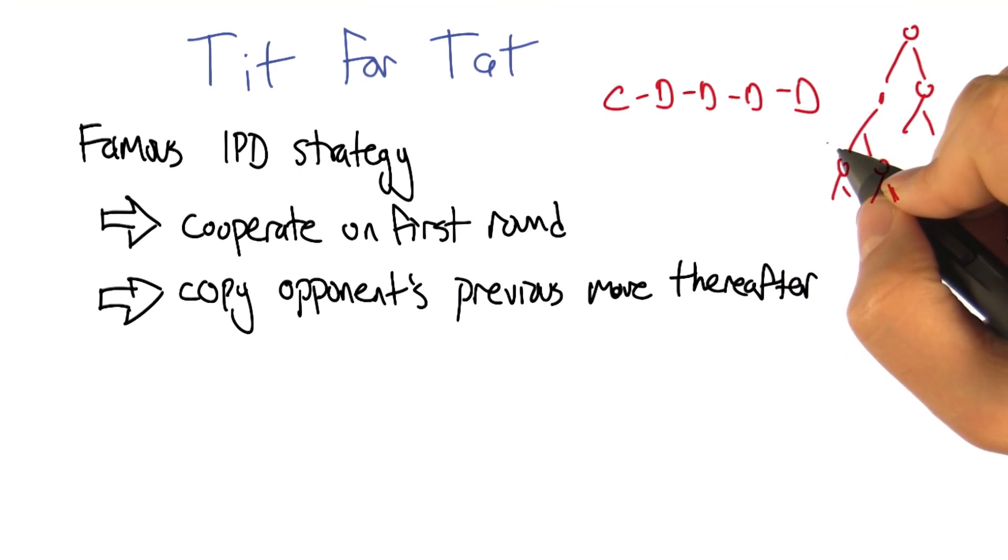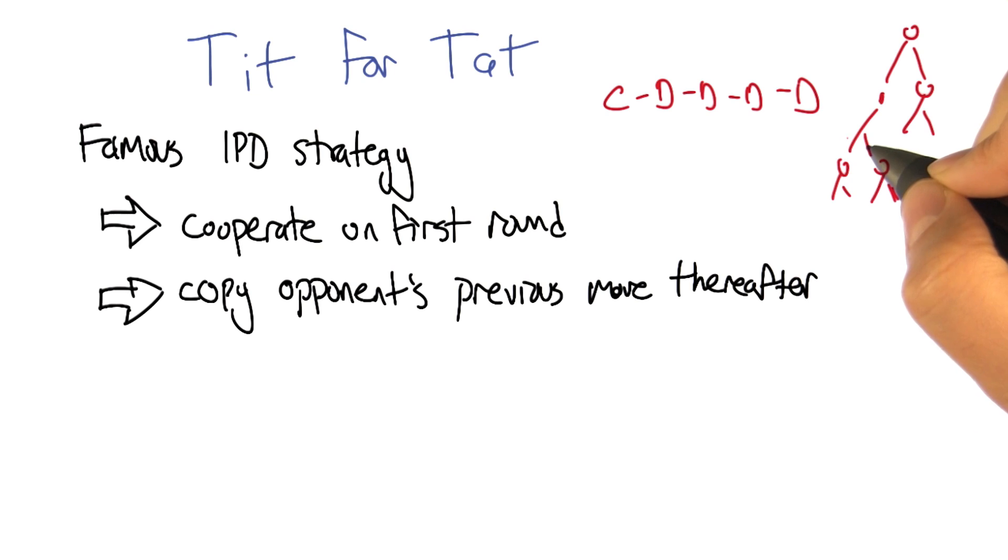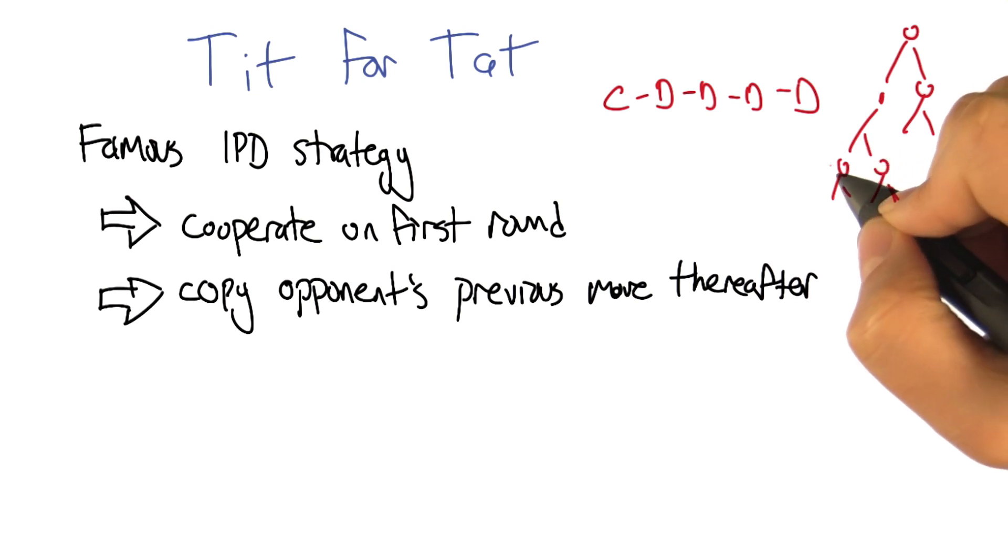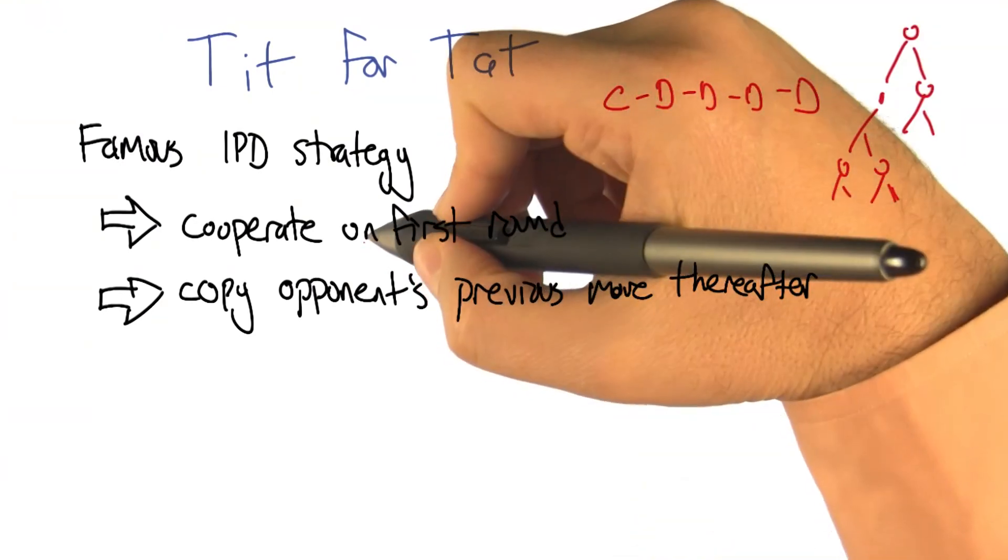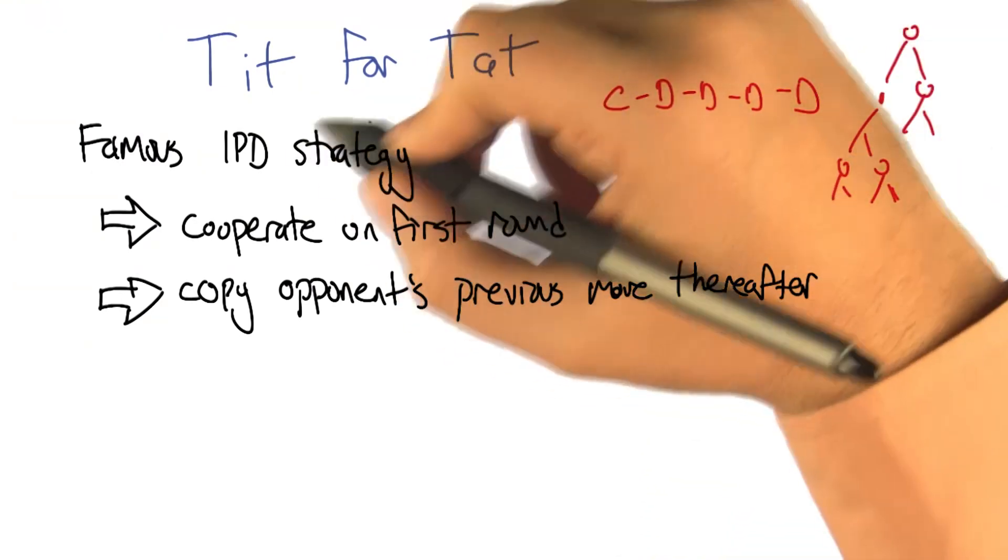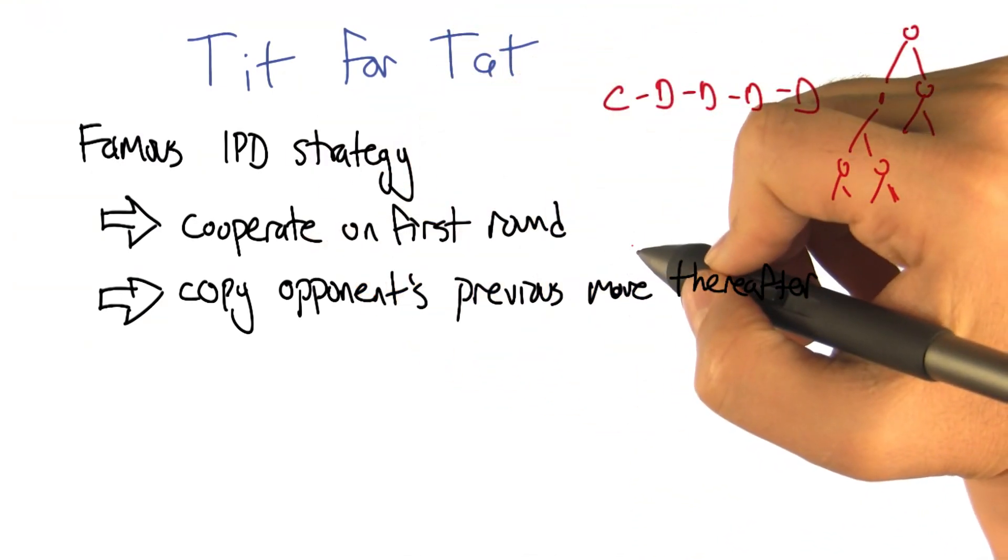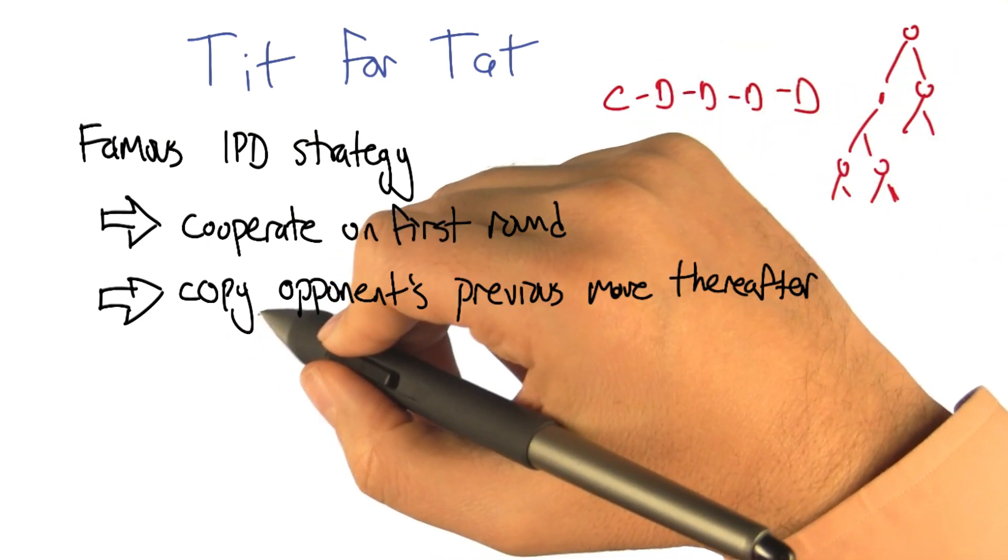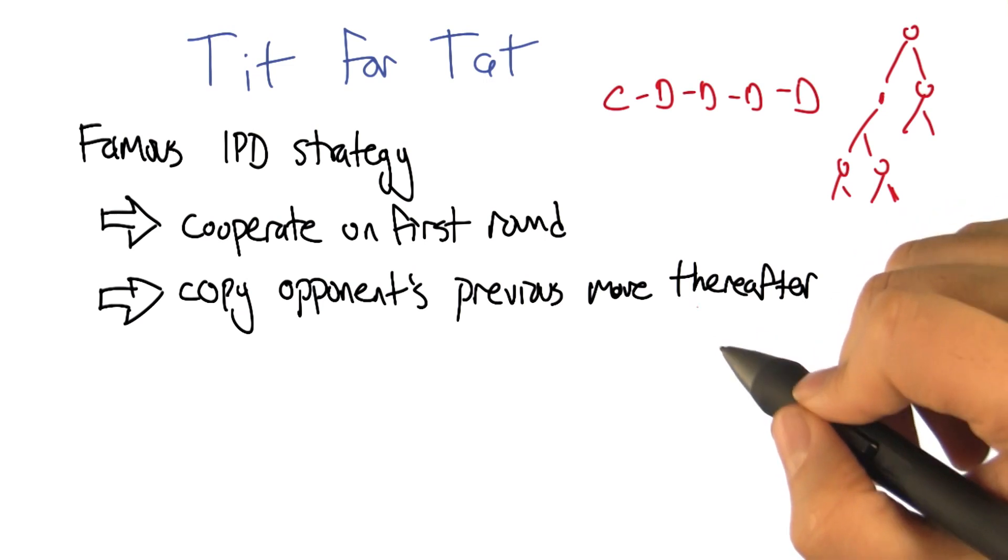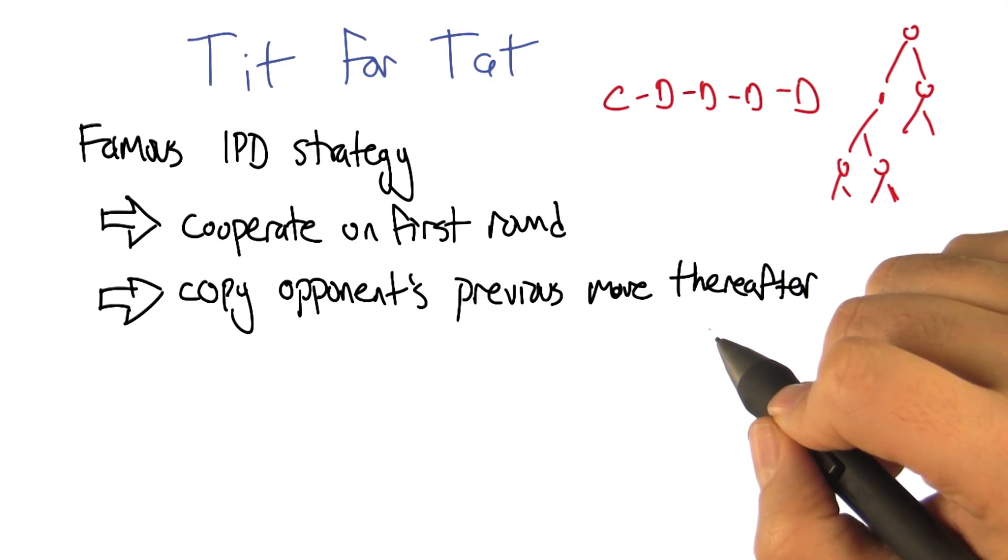I'm going to start off by presenting an example of such a strategy, one that's very famous for the iterated prisoner's dilemma, and it's called tit for tat. The structure of tit for tat goes like this: On the first round of the game, a player playing this strategy will cooperate. And then in all future rounds, the player is going to copy the opponent's previous move.